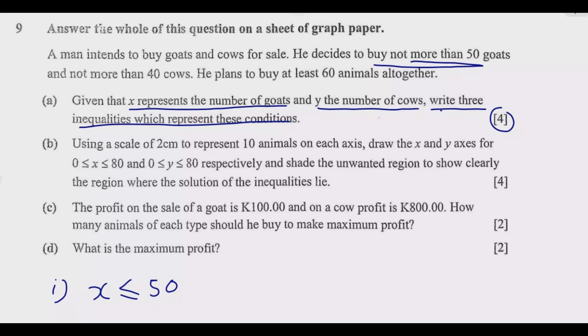Number two: not more than 40 cows. So the number of cows cannot also exceed 40. So inequality number two is that y should be less or equal to 40. That's what it means.